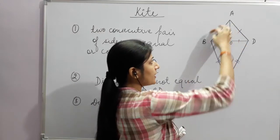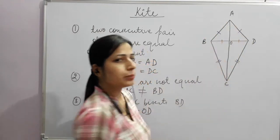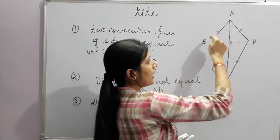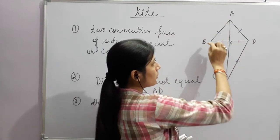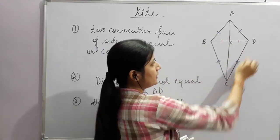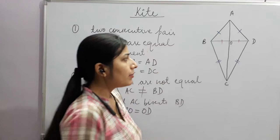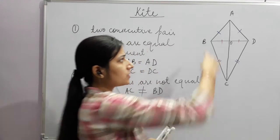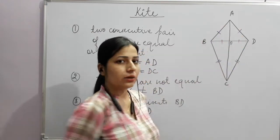Now we can see that inside this kite two triangles are formed: triangle ABD and triangle BCD. We can clearly see that in each triangle, two sides are equal.